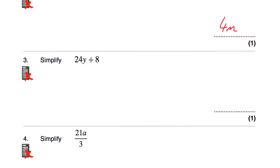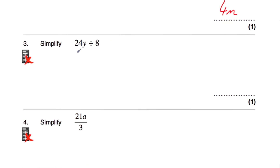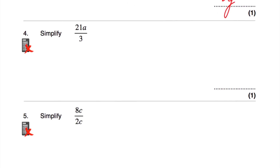Okay, question number 3 says simplify 24y divided by 8. So 24 divided by 8 is 3, so 24y divided by 8 would be 3y. Question number 4 says simplify 21a divided by 3. Well 21 divided by 3 is 7, so 21a divided by 3 would be 7a.